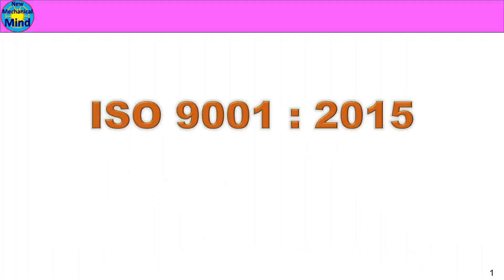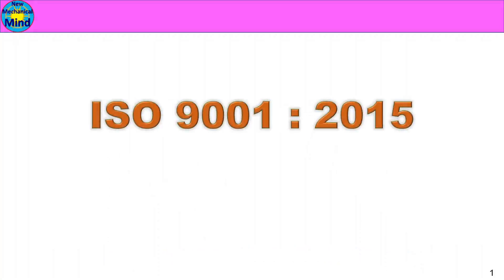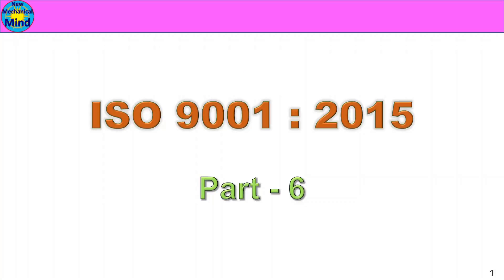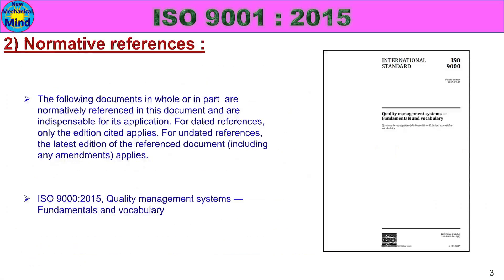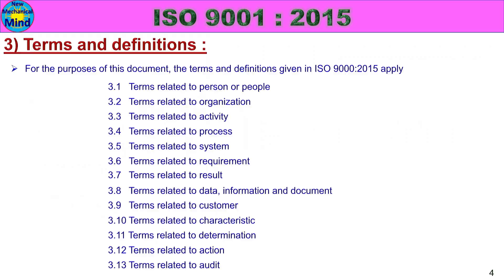In this video, we will see ISO 9001:2015 part 6 and part 5. In this video, we will see three classes in ISO 9001:2015. First class: scope. Second class: normative references. Third class: terms and definitions. We will see the details.